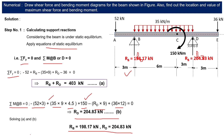So the reactions are RB equal to 198.17 kilonewton and RD equal to 204.83 kilonewton, which are shown in the diagram.